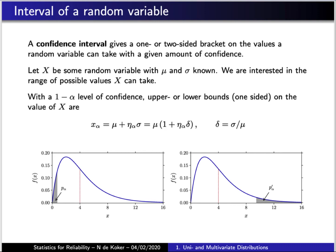One implication of defining the probability of a random variable — which we will need later when we deal with characteristic values and partial factors — is the idea of an interval of the random variable. There is some value x_alpha for which there is an associated probability that the values of the random variable will be above or below that value. So x_alpha can be viewed as a lower bound on a confidence interval with probability 1 minus p_alpha, meaning that values of x have a probability of 1 minus p_alpha of falling above x_alpha.